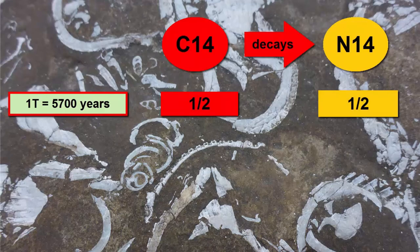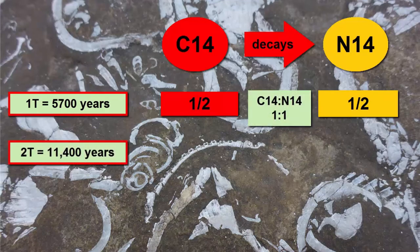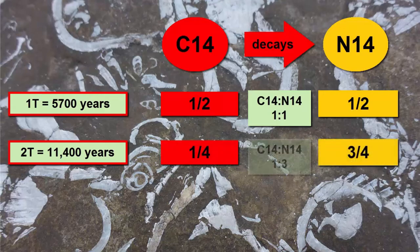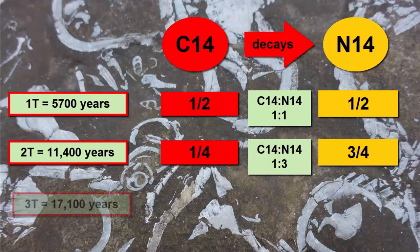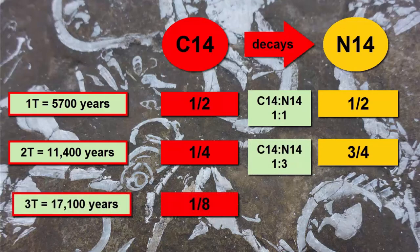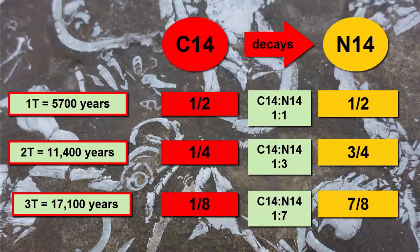After one half-life, assuming there was no nitrogen-14 to begin with in a rock sample, the ratio of the two should be 1 to 1, equal. After two half-lives, the half that remained of parent after the first half-life is now halved again — half of the half is a quarter. The remaining three quarters is daughter, and the ratio of parent to daughter is 1 to 3. Another half-life, and we halve the quarter. There's now one-eighth parent and seven-eighths daughter, and the ratio is 1 to 7, and so on.